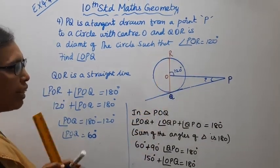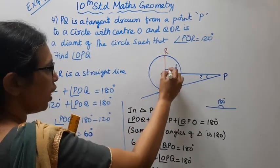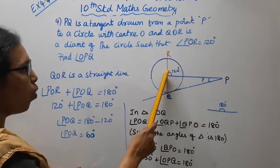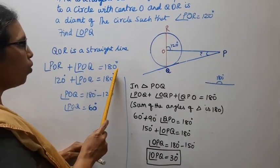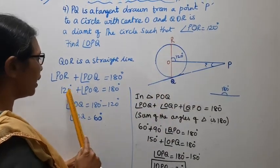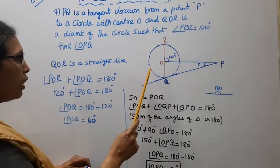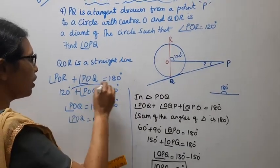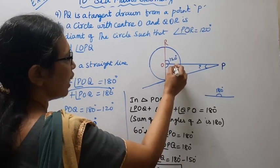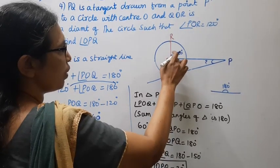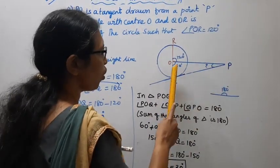QOR is a straight line, so it equals 180 degrees. Angle POQ equals 180 minus 120, which is 60 degrees.